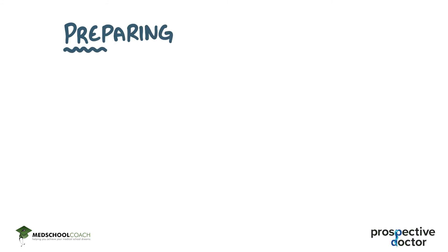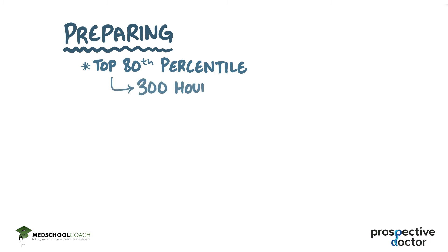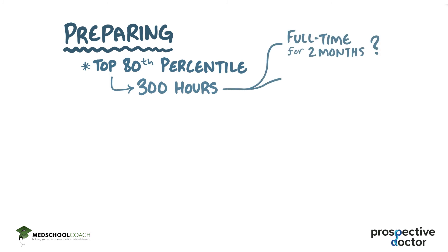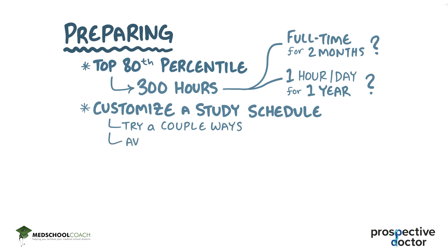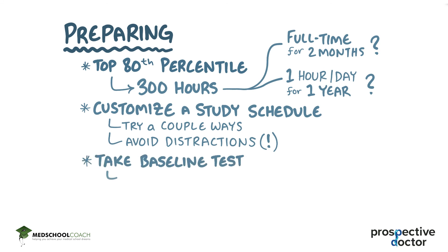In terms of preparing for the MCAT, one interesting data point is that students in the top 80th percentile clock in at about 300 hours of consistent, regular study time. That could mean studying full-time for two months, or studying one hour a day for a year. You should customize a study plan that fits your timeframe and try a few different ways of preparing to see what works best for you. As you start, it's helpful to take a baseline test to identify your weak spots so you can focus on them.